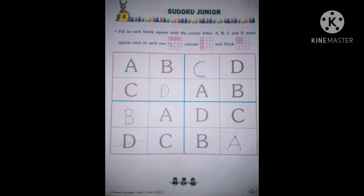Third row, B, A, sorry, blank, A, D, C. In the blank box, what you write, missing letter is a B. So children, write down here, B. Done.